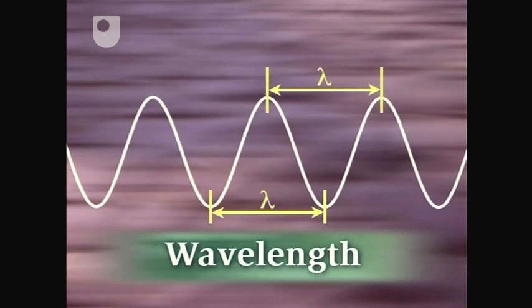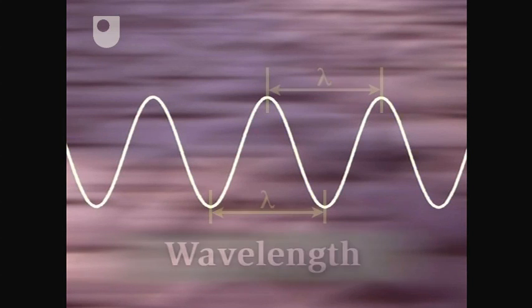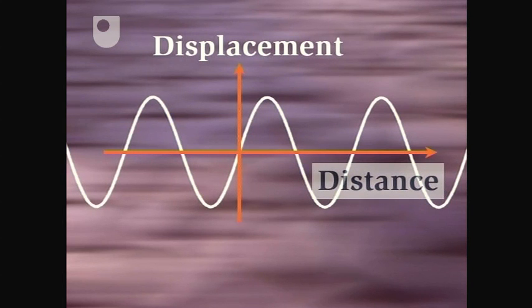The wavelength of a wave is represented by the Greek letter lambda. In fact, you can think of this snapshot of the wave as a graph, showing the vertical displacement of the wave as a function of distance, at a particular instant of time.